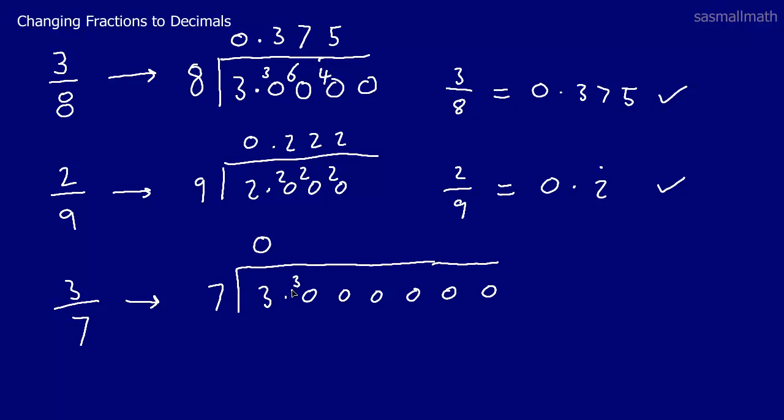Move the 3 across here now. 7s into 30. Well 4 7s are 28. We've got 4 there. So 28 from 30 leaves us 2. Put the 2 there.